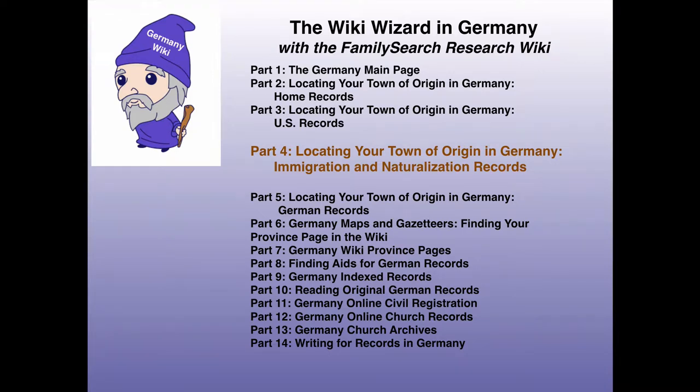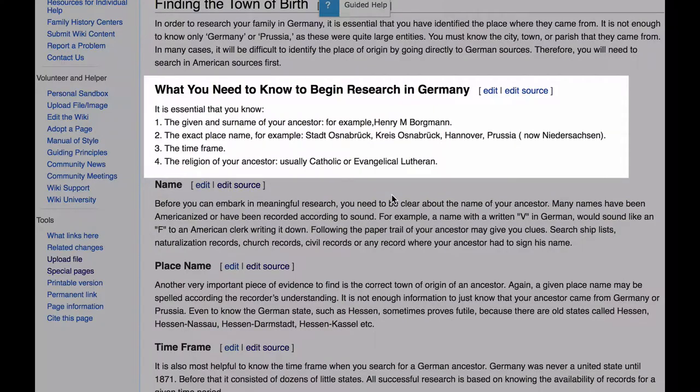This is the fourth video in a series intended to teach you how to use the features of the FamilySearch Research Wiki to help you locate records about your ancestors who lived in Germany. In order to match the information you have on the person in the United States to the correct person in the records of Germany, you need to try to find the full name of your ancestor, the exact place name of the town he lived in, the time frame that you're looking for records, and the religion.